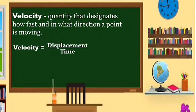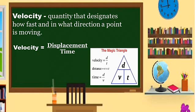Velocity is equal to the displacement over time. When it comes to displacement, we can use this magic triangle to memorize the formula for velocity. We have v, d, t. Velocity is equal to d over t. Distance is equal to v times t. And time is equal to d over v.